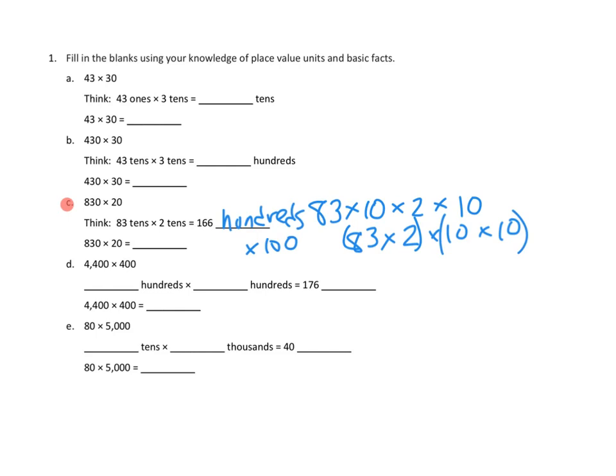And so it looks like they've done essentially this, which uses the associative property. 83 times 2, they've said, oh, that's 166. And now we have to figure out what this is. Let's see. 10 times 10, that's really easy. So it's 100. So I think they intend us to write 166 hundreds because they're still doing it in unit form. But it would also be just as correct to say 166 times 100. We could do it that way too.